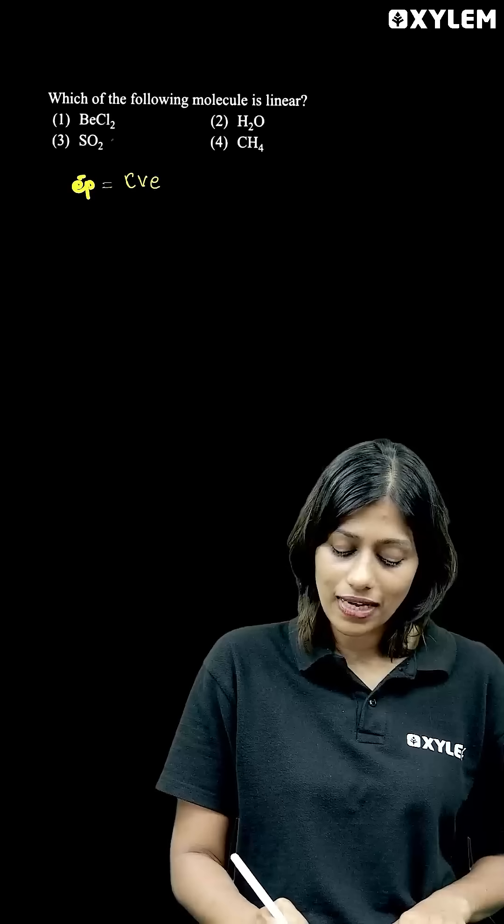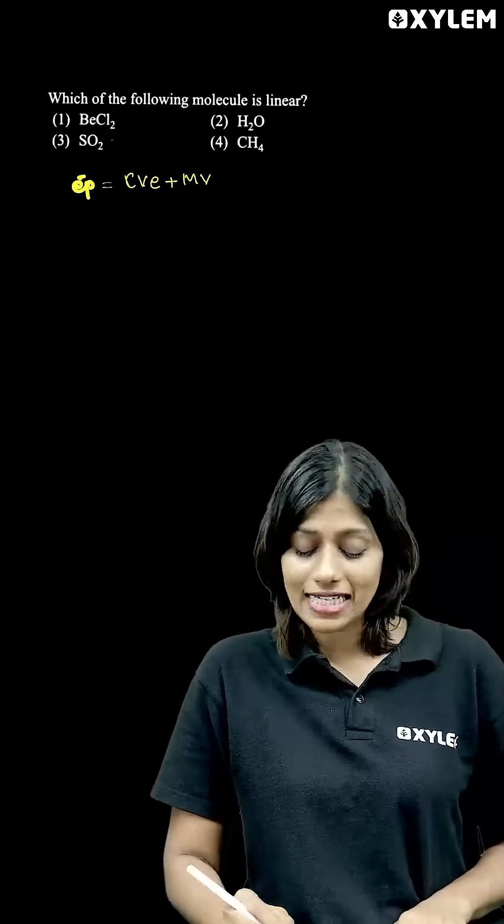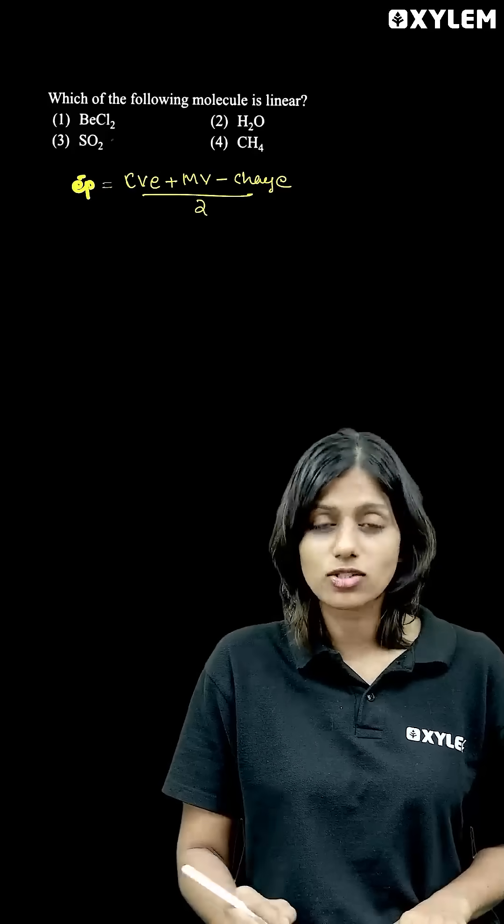The formula is: central atom valence electrons plus surrounding monovalent atom minus charge, divided by 2. This is the electron pairs.